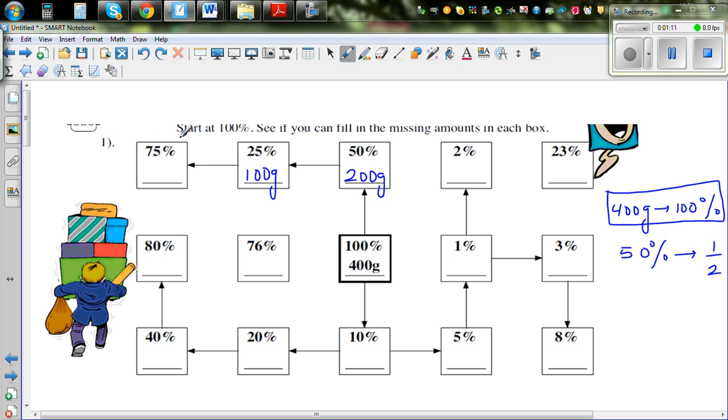So I want to think how to find 75%. So 75% logically I hope you can see is 25% plus 50%. So if you know 50% and if you know 25% you can find 75%. So 200 grams plus 100 grams is 300 grams.